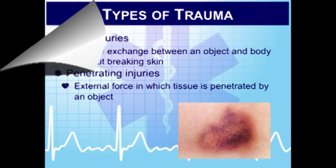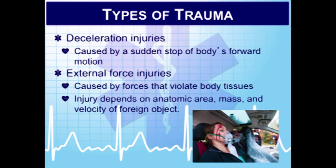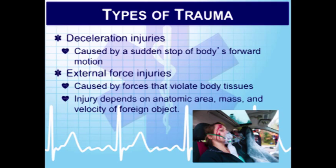We have deceleration injuries — common causes are automobile accidents, motorcycle accidents, or patients who have fallen from great heights. Things that happen include shearing injuries within the body, blast injuries, and rupturing injuries. External force injuries involve external forces violating body tissues — gunshot wounds, stabbings, any type of projectile, such as from explosions. The injury severity depends on where exactly in the body the injury takes place, the mass behind the projectile or wound, and the velocity of the foreign object.